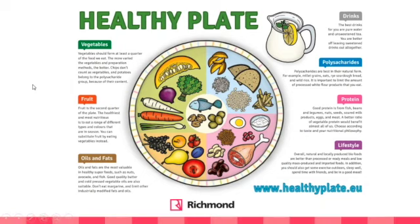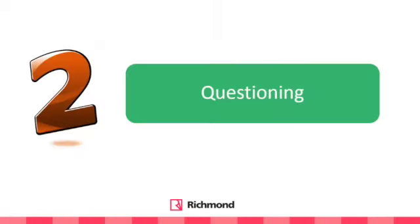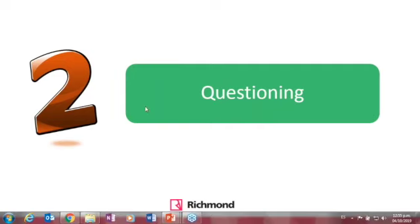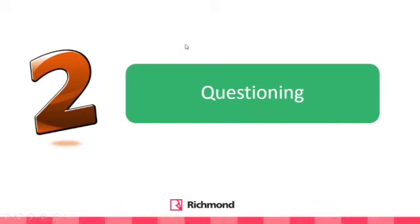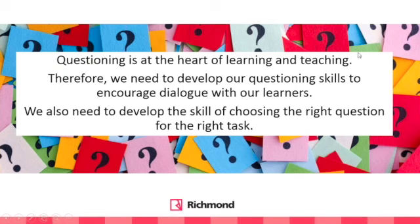That was the first idea: brainstorming before and afterwards. Idea number two is questioning — making the right kind of questions. You can also ask 'What did you learn today?' at the end. Making the right question is an art and you have to practice it a lot. Questioning is at the heart of learning and teaching; we need to develop our questioning skills to encourage dialogue with our learners and to choose the right question for the right task.